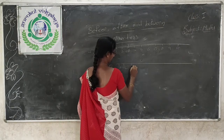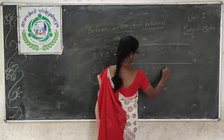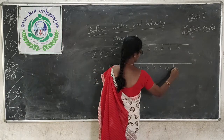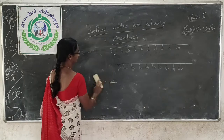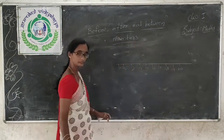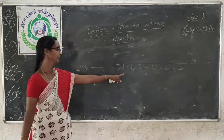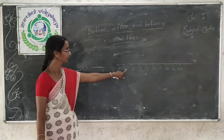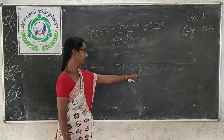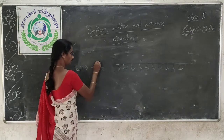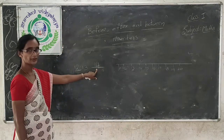Now see: 11, 12, 13, 14, 15, 16, 17, 18, 19, 20. Here 13 is there. Which number comes before 13? 12. So 12 comes before 13. And what comes after 13? 14. So 12 comes before 13 and 14 comes after 13.